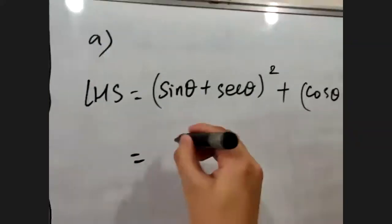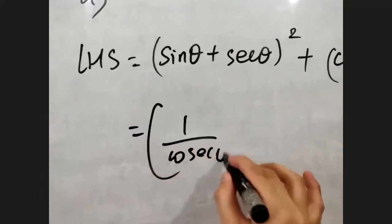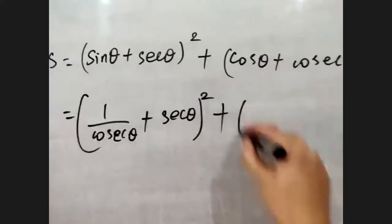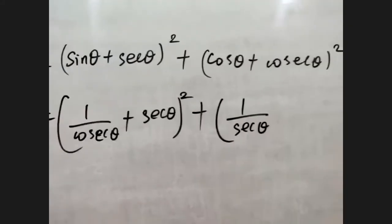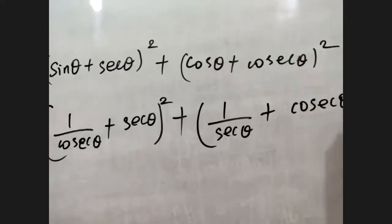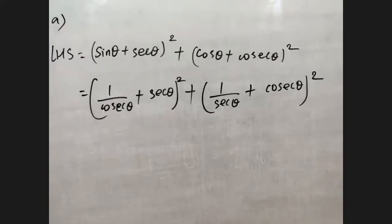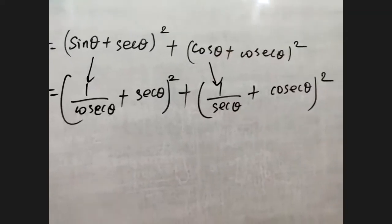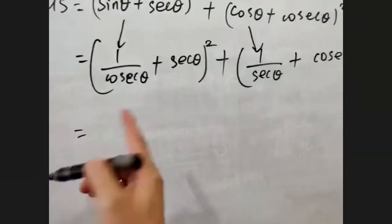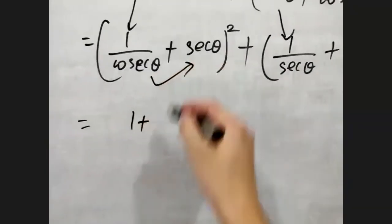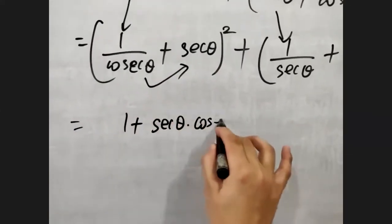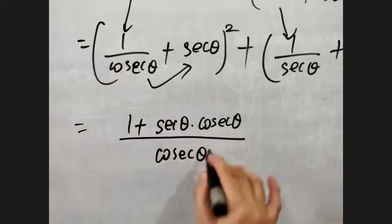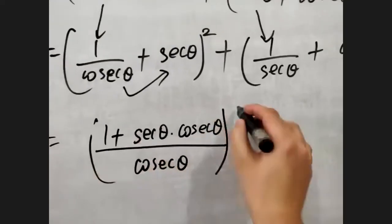So let's convert sine and cos into cosec and sec. The first step: sine theta is written as one by cosec theta, and sec theta remains as it is because we have it in our right part. Similarly, cos theta can be written as one by sec theta, and cosec theta remains as it is because it is needed in the right part. So sine has been converted into cosec and cos has been converted into sec.